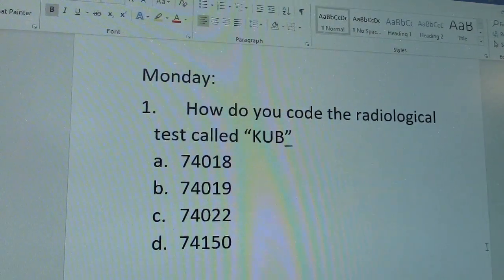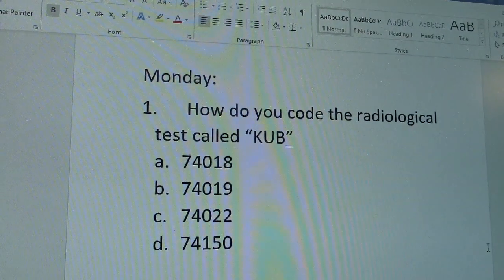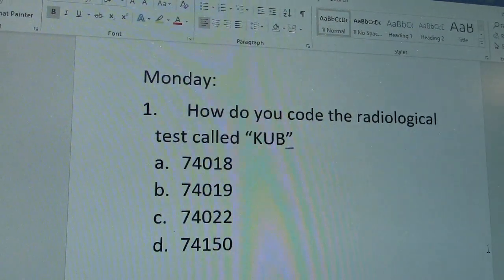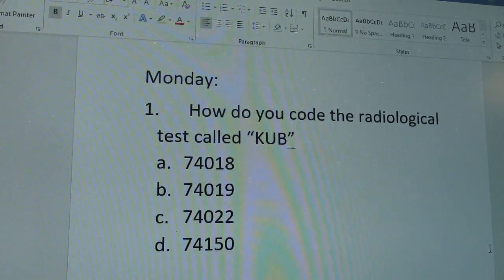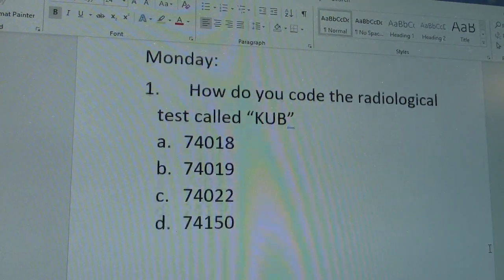How do you code the radiological test called K-U-B? K-U-B. I've always been told that stands for kidney, ureters, and bladder.